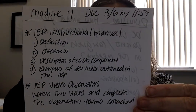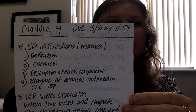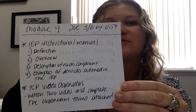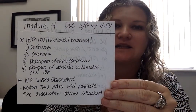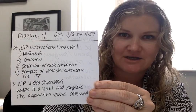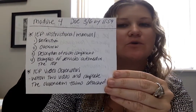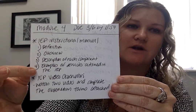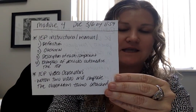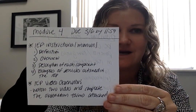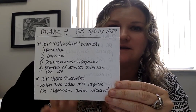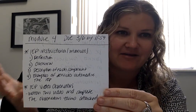For your first part of the assignment, you are going to create an instructional manual that's designed for teachers and parents explaining the key components of the Individualized Education Plan. The components I want you to address are: first, what is the IEP? Define what the IEP is. Then, provide an overview of what the IEP entails — what does it have in it?